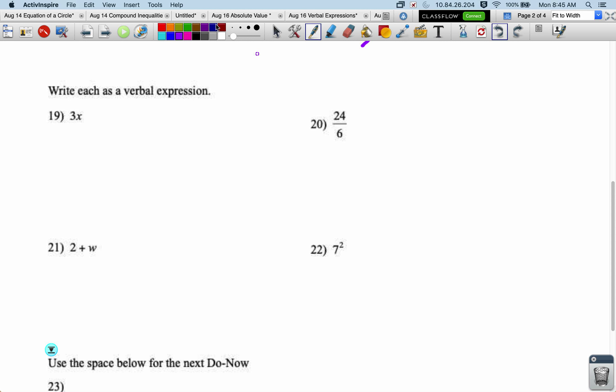Write each as a verbal expression. So in number 19, there's implied multiplication here. A number right next to a variable means that there's multiplication. This would be the product, since it's multiplication, of 3 and x.